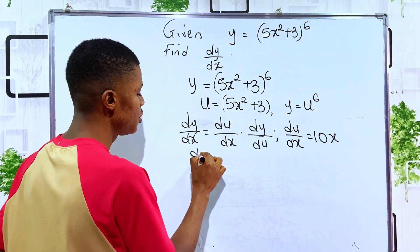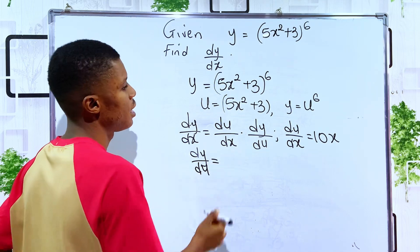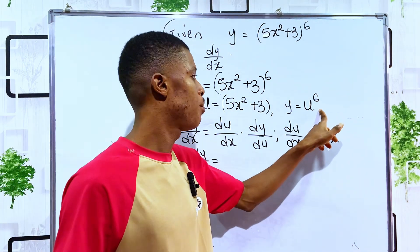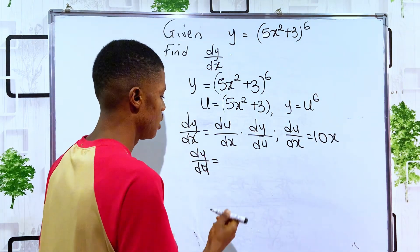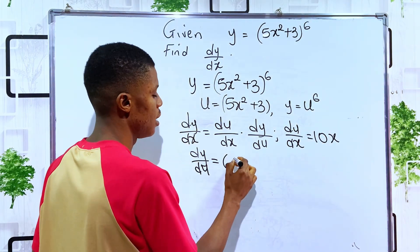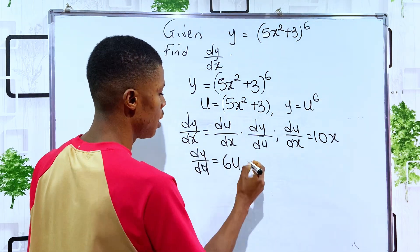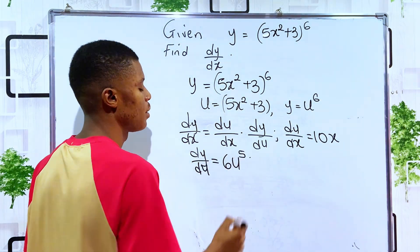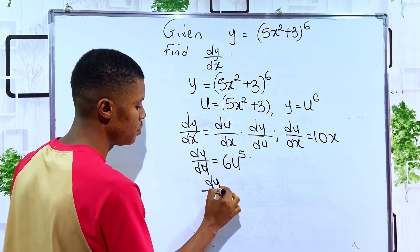Then differentiating y with respect to u is the same thing. We multiply the power to the constant: 6 times 1 is 6, so we have it as 6. We minus 1 from the new power. If you minus 1, you have it as 5.